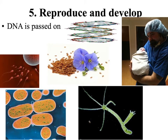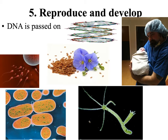The fifth characteristic all living organisms have is reproduction and development. Reproduction focuses on passing DNA on from one generation to the next. All organisms reproduce either sexually using two partners, or asexually by making a clone of itself. Bacteria and hydra are examples going through asexual reproduction. Humans, plants, and other organisms go through sexual reproduction, requiring a male and female to contribute DNA to the next generation.